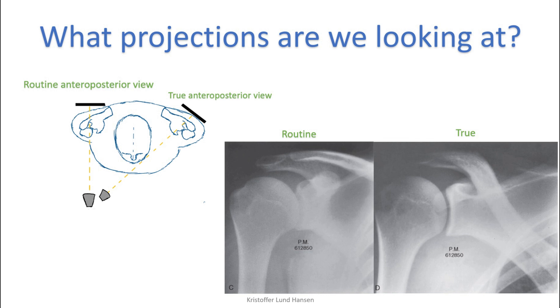The most glaring difference is how well you can visualize the glenohumeral joint. In the true variant the joint space is nicely visible, while in the routine one the humerus covers parts of the glenoid making it hard to evaluate.